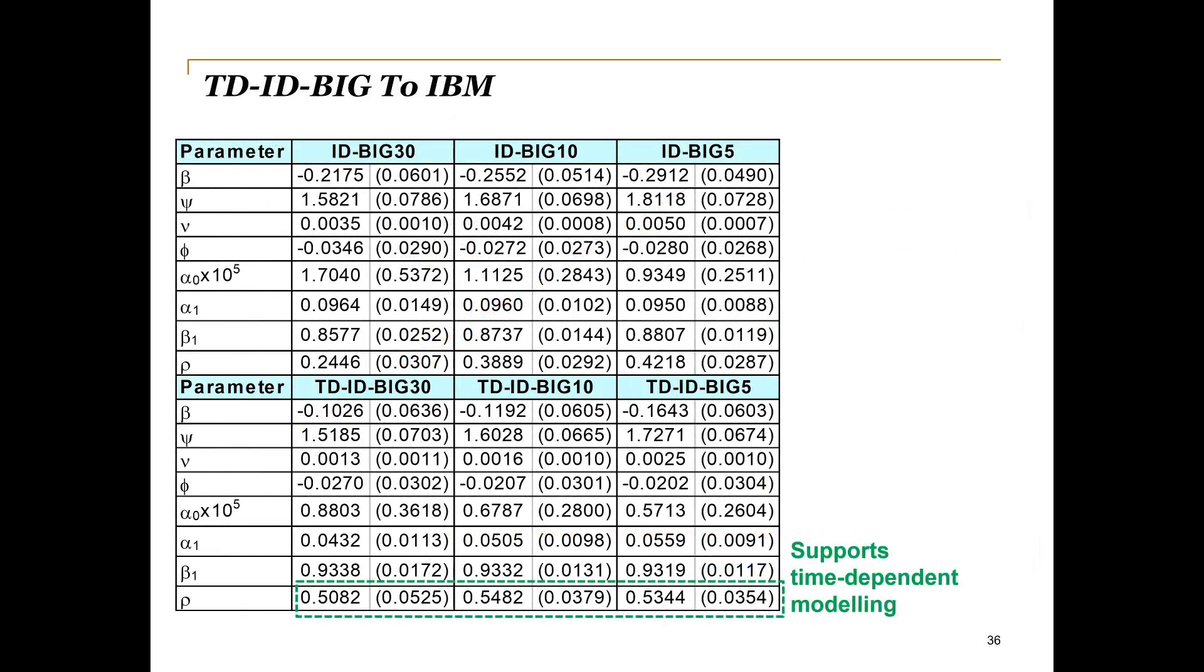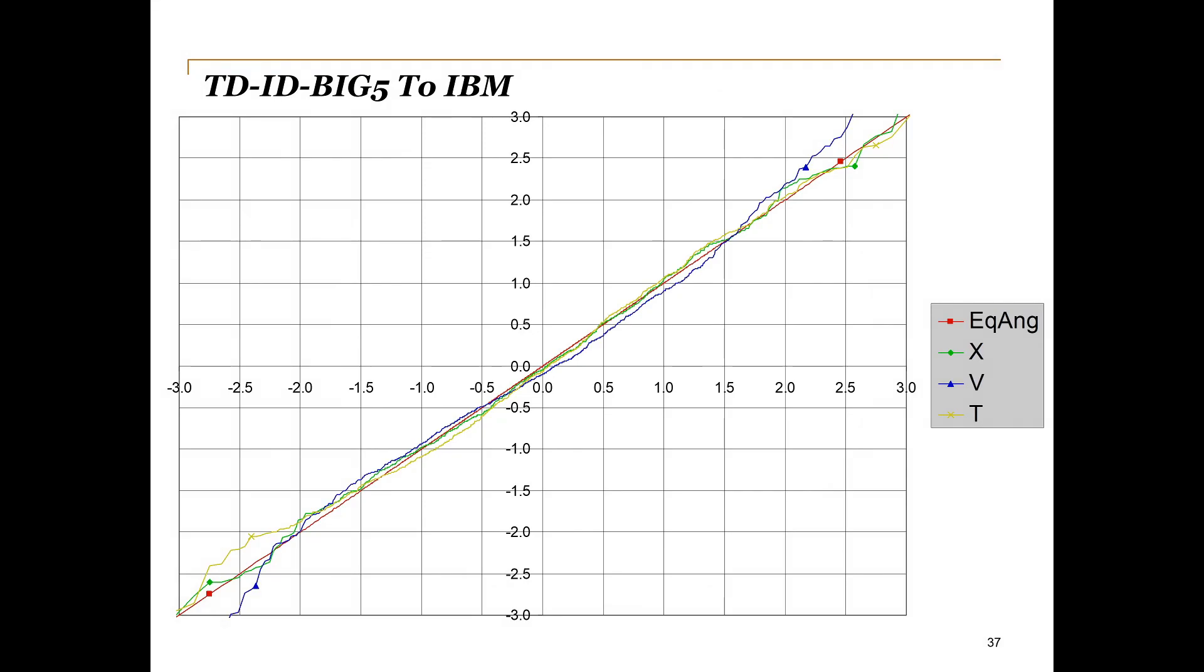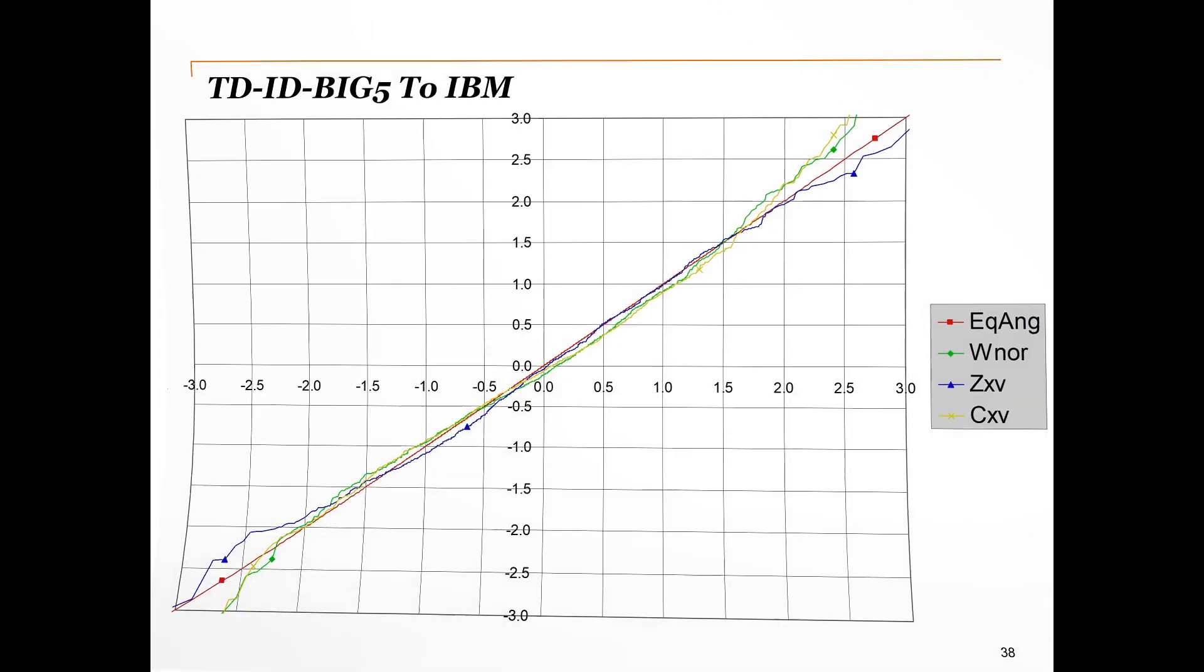Fitting this model, we confirm that the autocorrelation is indeed present in the IBM data, as the estimate is significantly different from zero. Also, we see some changes in the other estimates as a result of adding the time dependence. Especially alpha1, beta1, and rho are severely biased by the dependence in W. Looking at the quantile-quantile plots on the next two slides, we see that the assumptions on the variables are still reasonable, as before.